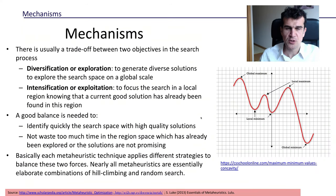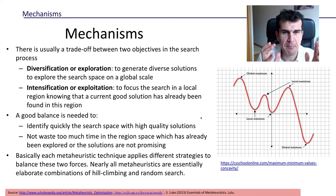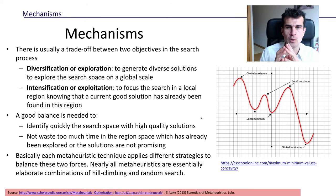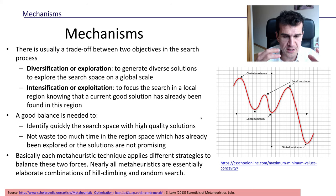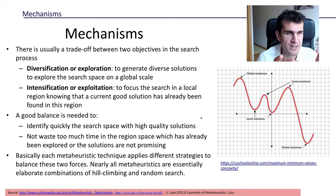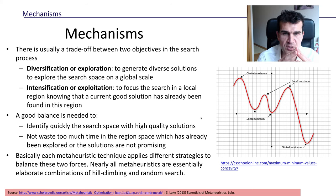Hi guys. Usually when we want to find a good solution we have to keep in mind two conflicting objectives. On the one hand, we want to be able to get a general overview of the search space — so we know which areas look more promising, which areas are likely to have very good solutions, and which areas are likely to be bad so we don't waste our time there. This strategy of getting a general overview is usually called diversification or exploration — you want to explore as much as possible of the search space.